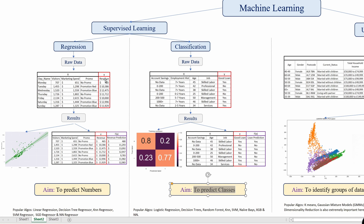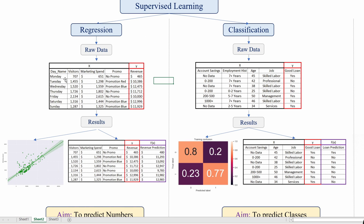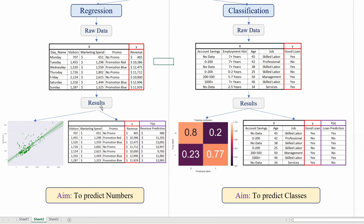Starting with regression. Imagine we have raw data with the day name, visitors, marketing spend, promo, and revenue. All of these are our x variables — the known ones — and the red one, our y, is the revenue, which is what we are trying to predict. In the results you can see we found the line of best fit, creating a function f that predicts revenue based on the x variables. For our first prediction we predicted $480, however the actual was $465.